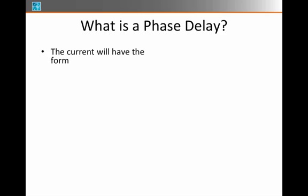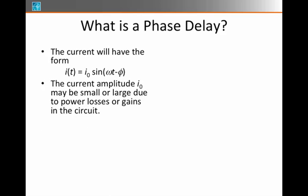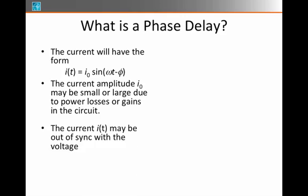Phase delay is a shift in the current relative to the voltage. The current is going to have some form like i(t) = I₀ sin(ωt - φ). The current amplitude I₀ may be large or small due to power losses or gains in the circuit. That's one of the things we'll be calculating, but it also may be out of sync with the voltage, and that's what the phase delay is supposed to tell us.